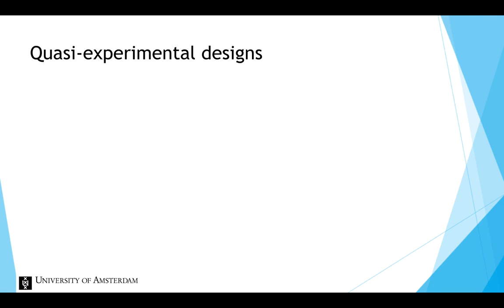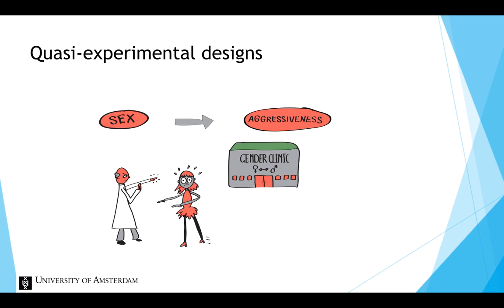In other cases, the independent variable is an individual difference variable and can't be manipulated. Suppose that we wanted to investigate the effect of gender on aggressiveness. This automatically entails a quasi-experimental design, since we cannot assign children to be a boy or a girl for the purpose of our study.